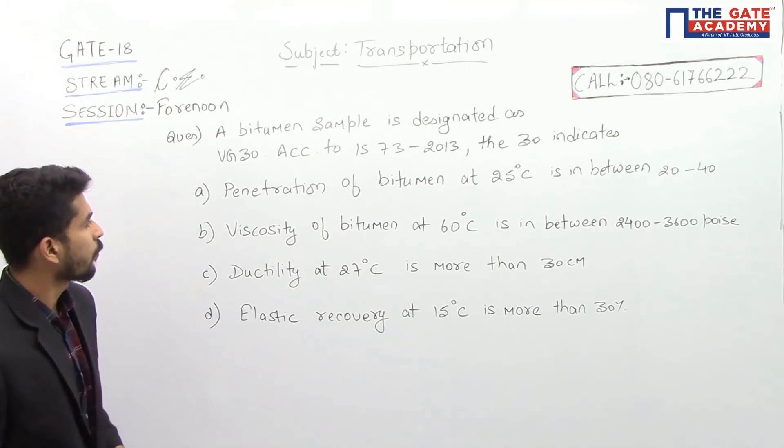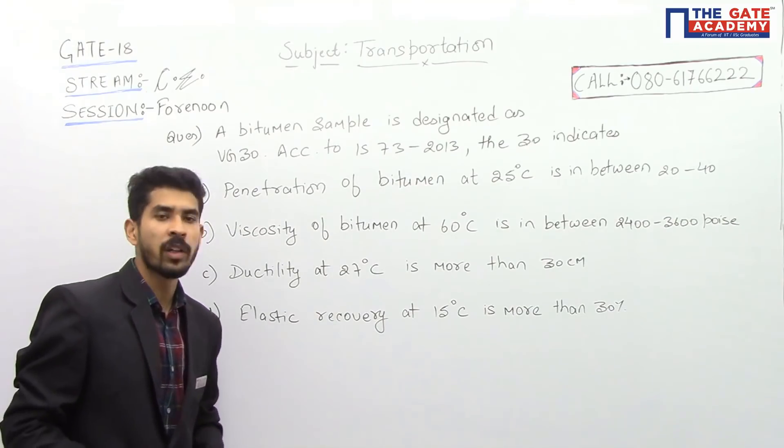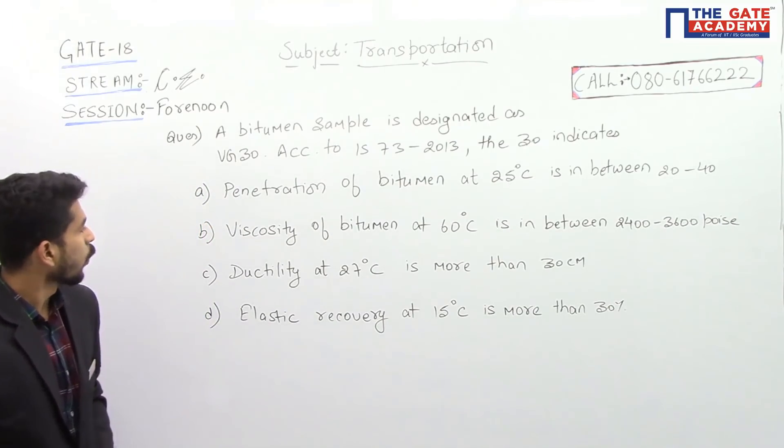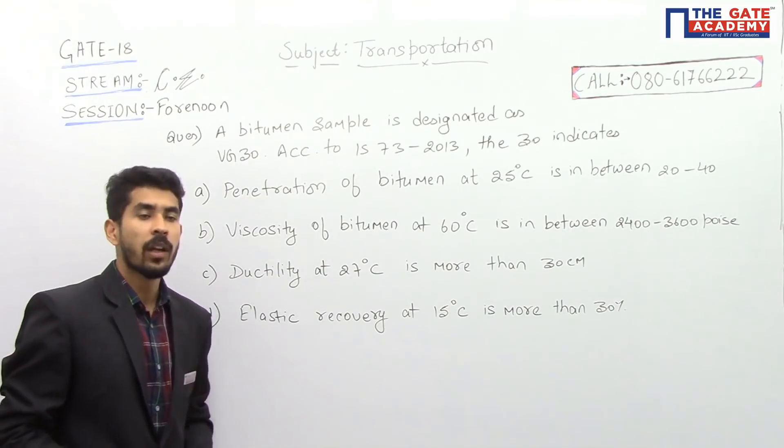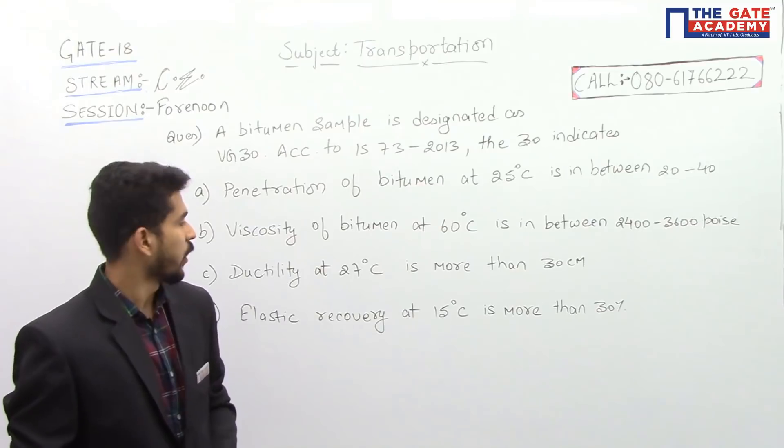The first one is penetration of bitumen at 25 degrees C is in between 20 to 40. Second one, viscosity of bitumen at 60 degrees C is in between 2400 to 3600 poise.